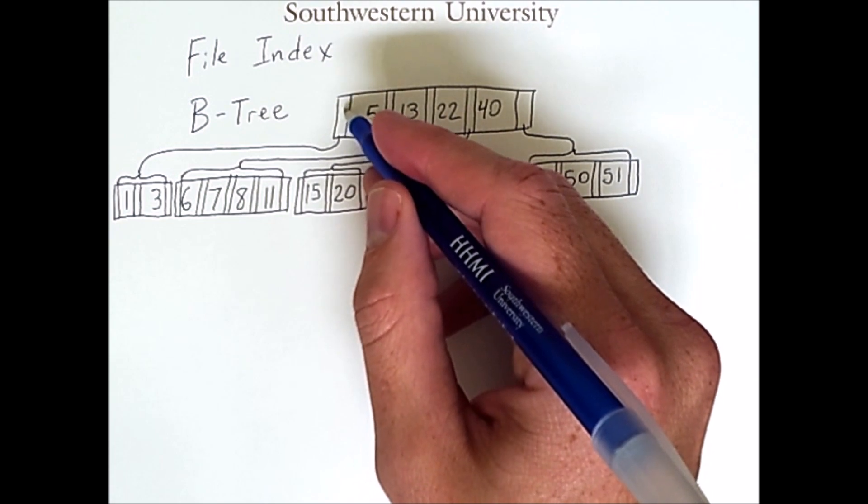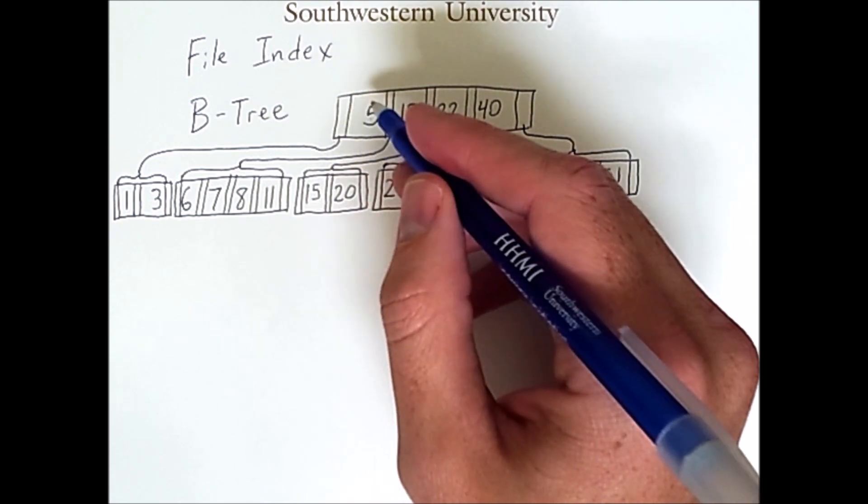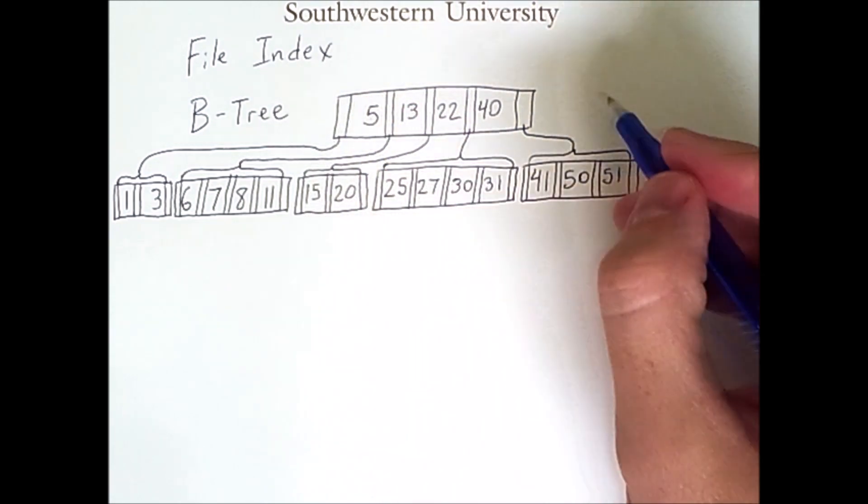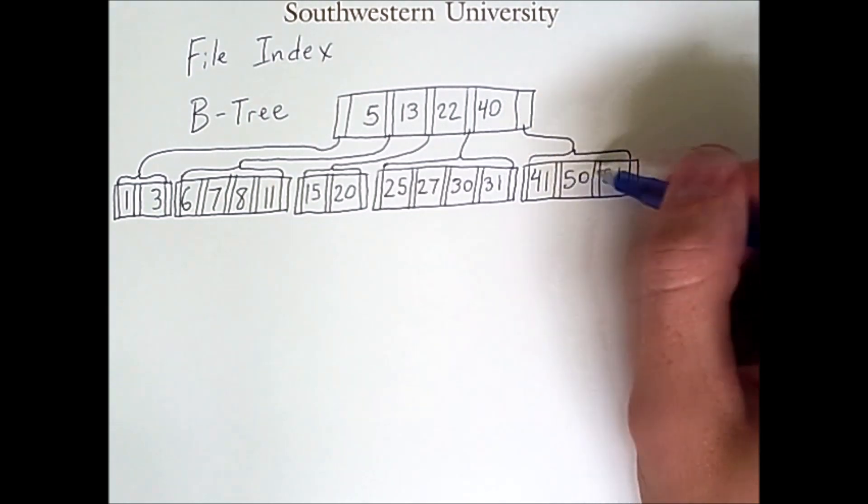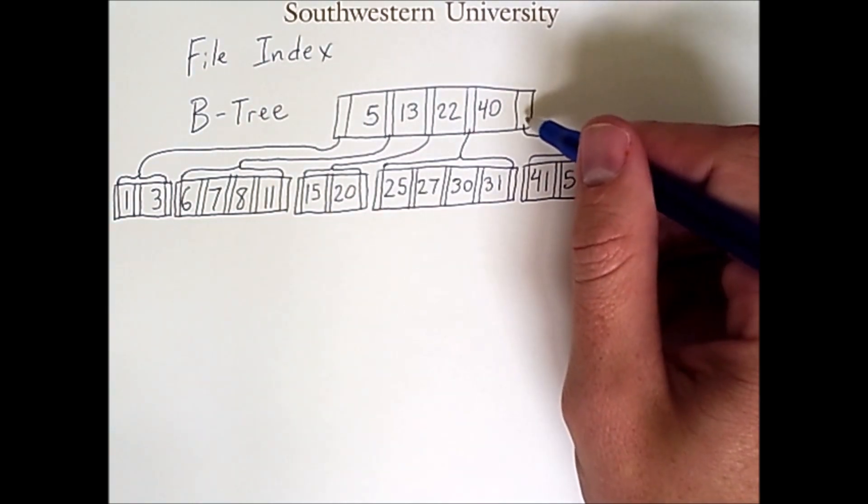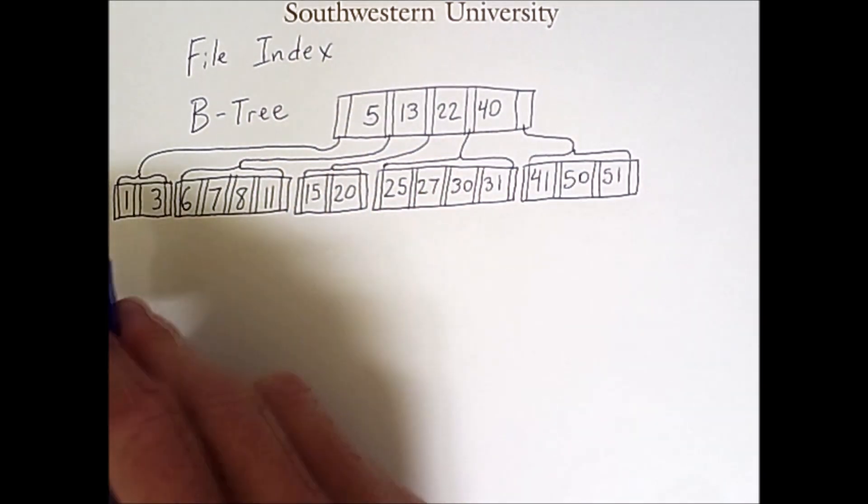And this child node on the far left will all be less than that key, and the values in this child node are all greater than that key.